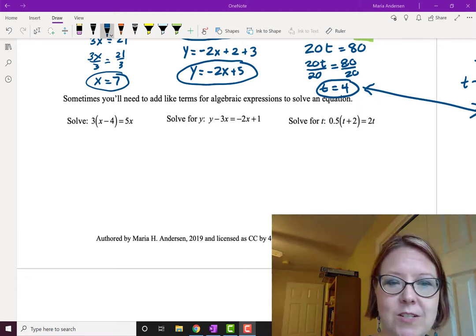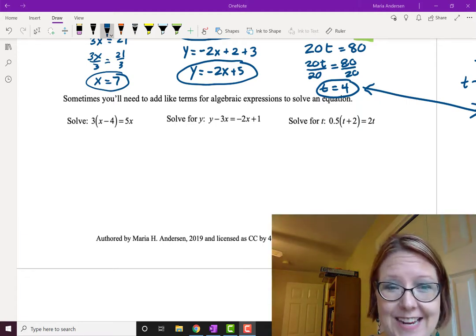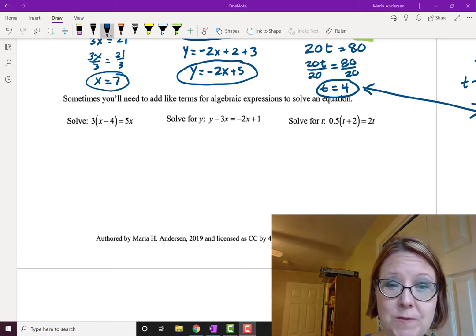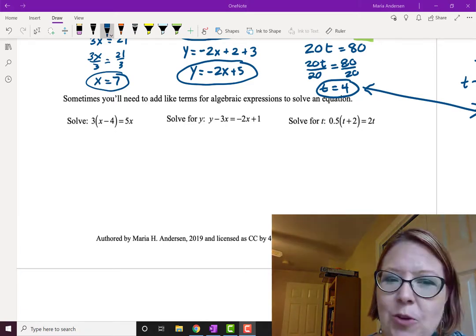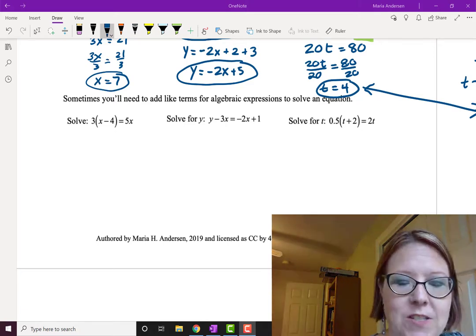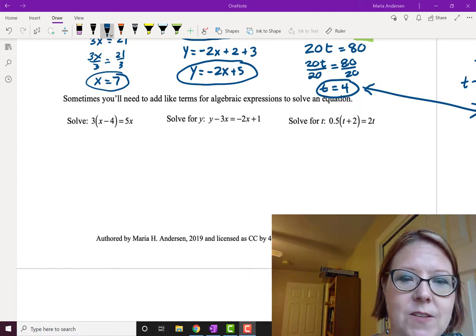In this first equation, we're going to solve 3 times the quantity x minus 4 equals 5x. Let's start by doing the distribution on this one so that we can get a sense for what's really there. So 3 times the quantity x minus 4, we'll do 3 times x, which is 3x, and 3 times minus 4, which is negative 12. So we have 3x minus 12 equals 5x.